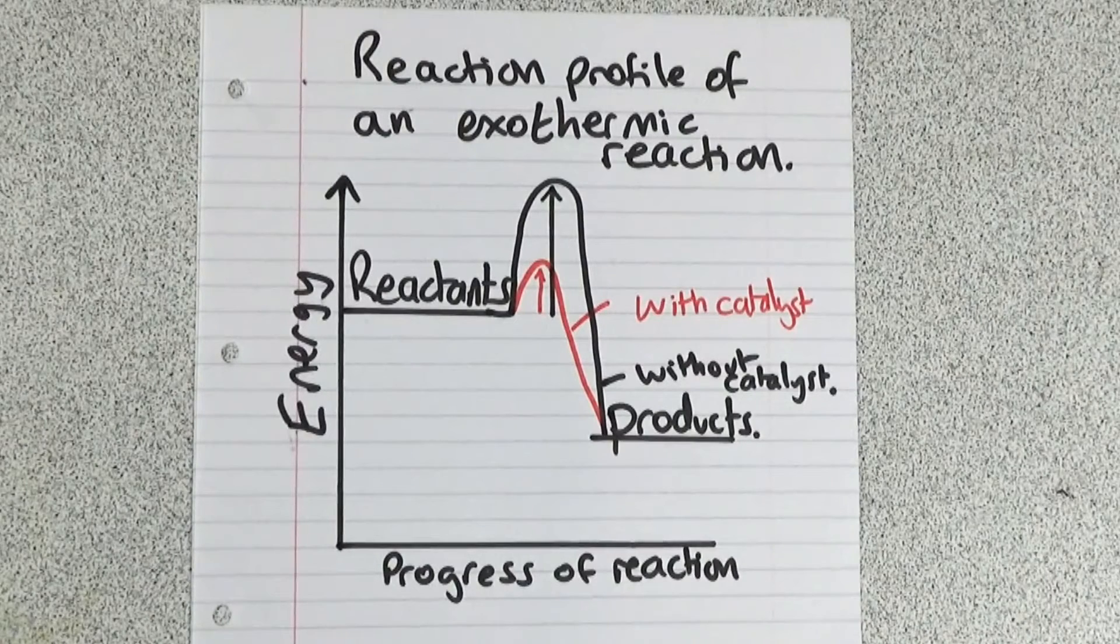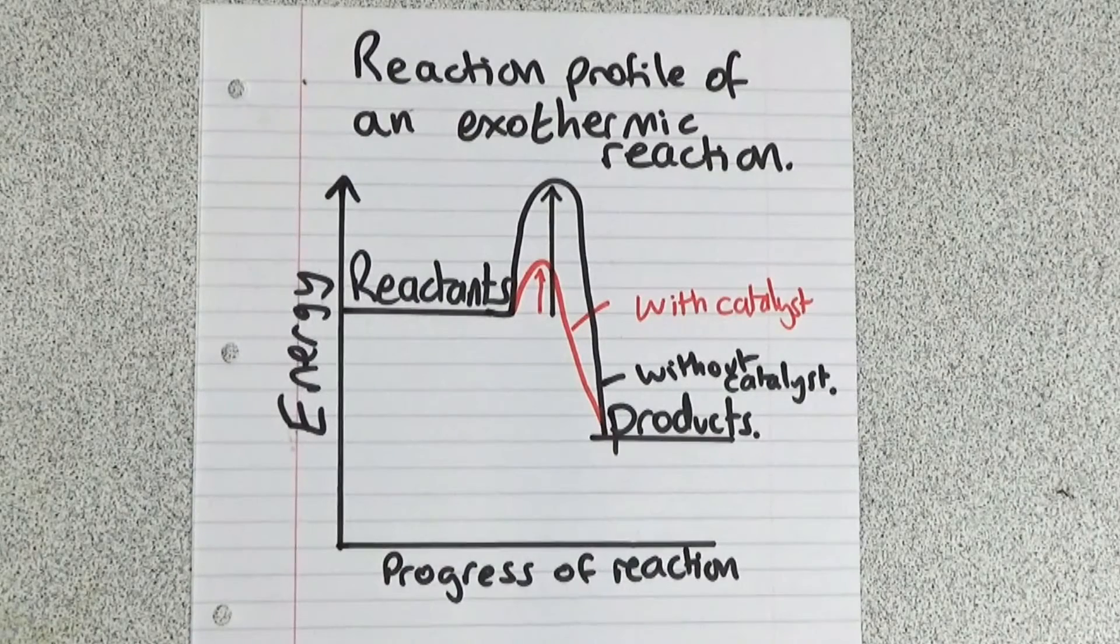They will give you a reaction profile, in this case for an exothermic reaction, and the question would say draw on it the line that you would get if you used a catalyst.